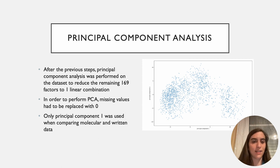So, principal component analysis was the final step, which involved reducing the 169 factors to just one linear combination. In order to perform the principal component analysis, the missing values from the previous step had to be replaced with 0. And you can see principal component 1 and 2 in the graph here. Only principal component 1 was used when we actually compared the molecular and written data. But in order to show the results of the PCA, both principal component 1 and 2 have been included in the graph.